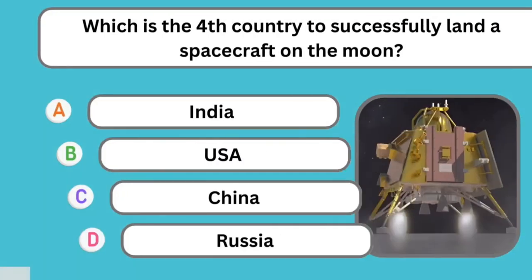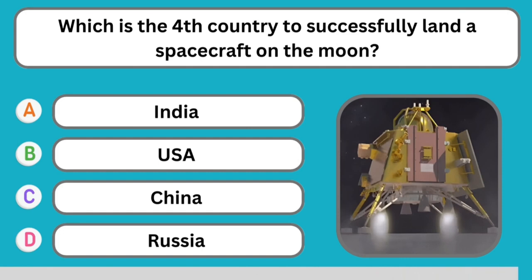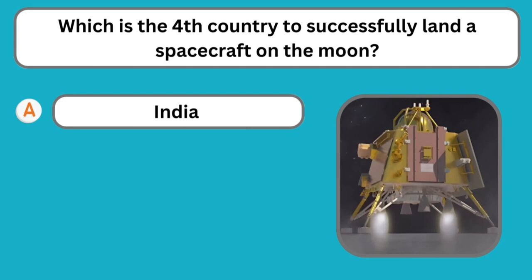Question number sixteen: Which is the fourth country to successfully land a spacecraft on the moon? The correct answer is India. India is the fourth country to successfully land a spacecraft on the moon.